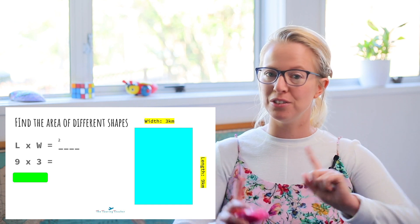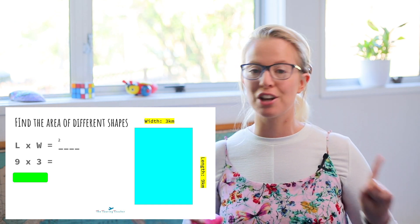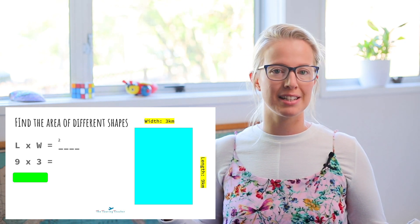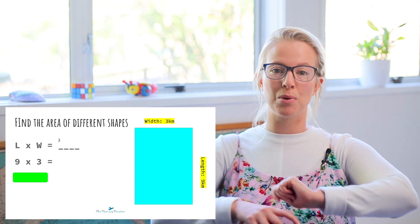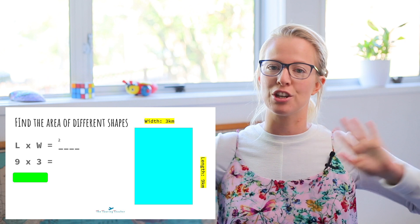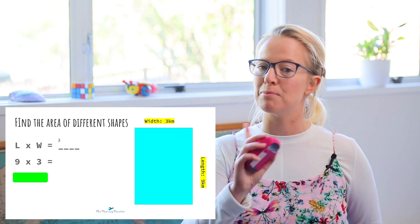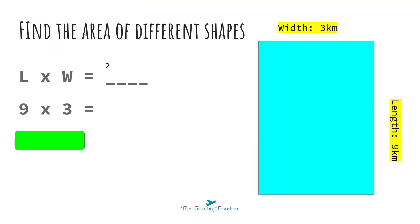So our next rectangle — let's check the unit of measurement, which is kilometres. So this is a pretty big rectangle — it might be a field for a farm or where a new business has been built. Let's check what the length and the width are so we can multiply those together. The length is nine kilometres and the width is three kilometres. So we need to do nine times three — the answer is 27. So 27 kilometres squared is the area of this rectangle.